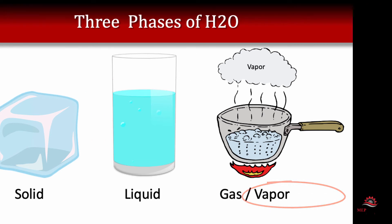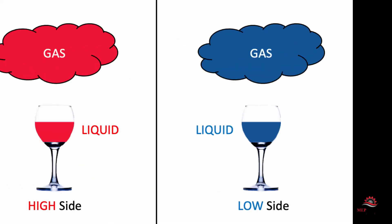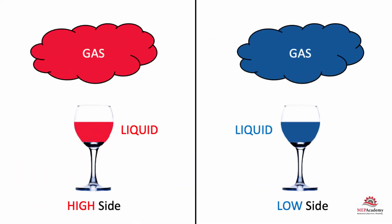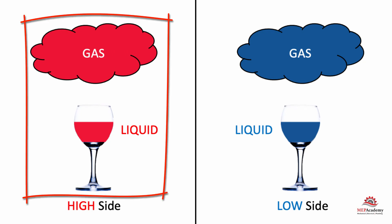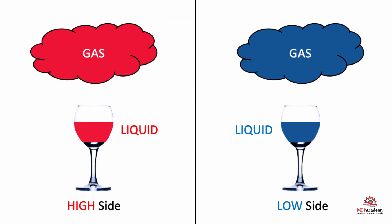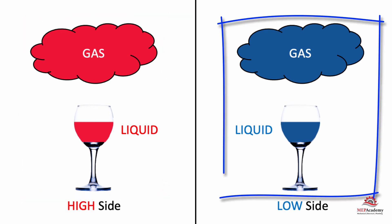In the refrigeration cycle, you only have two of these phases: liquid and gas. We never get the solid — if you get the solid, you've got a problem. So you only have liquid and gas in the refrigeration cycle.